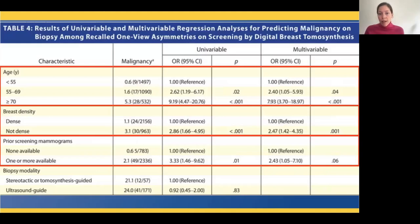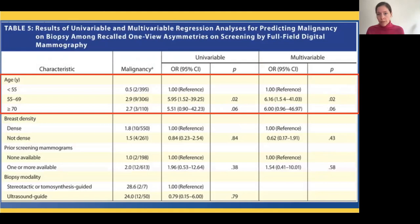The univariate and multivariate regression analysis for predictors of malignancy was stratified by modality. In the tomosynthesis group, age, breast density, and availability of prior screening mammograms were all predictors of malignancy on univariate analysis. On multivariate analysis, age and breast density were both significant predictors — specifically older age and having non-dense breast tissue. In the FFDM group, which had only 14 cancers, age was a significant predictor but only for the 55 to 69 age group; the greater than 70 age group was not significant. No other significant predictors of malignancy were found in the FFDM subgroup.